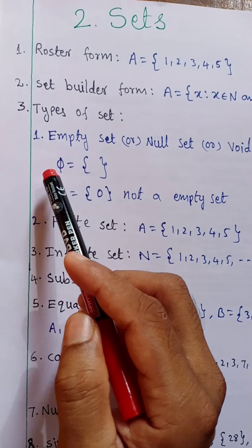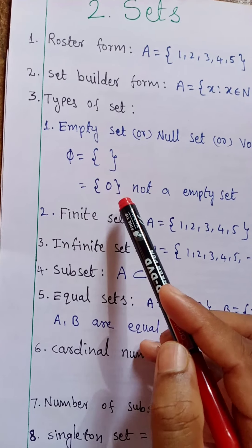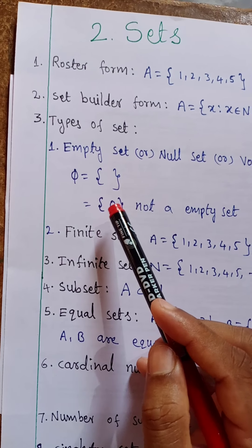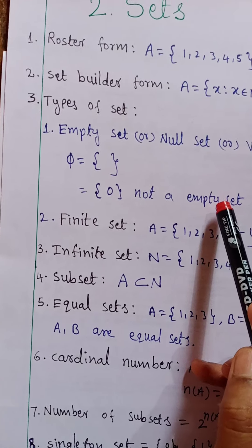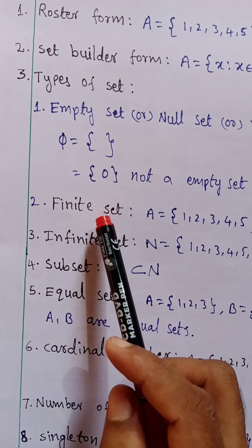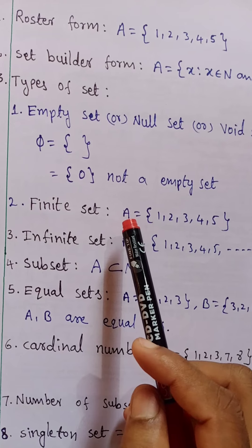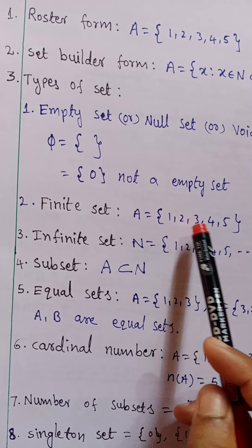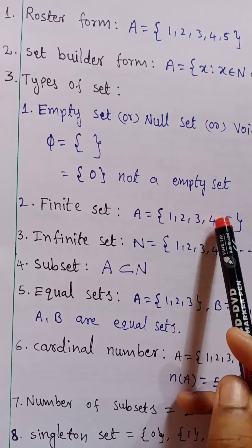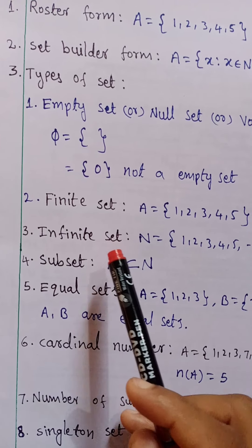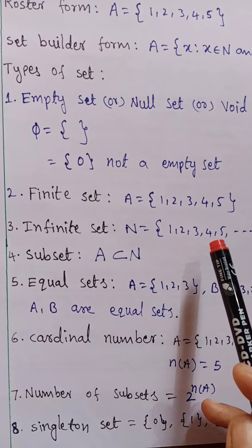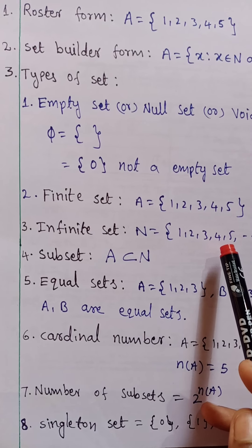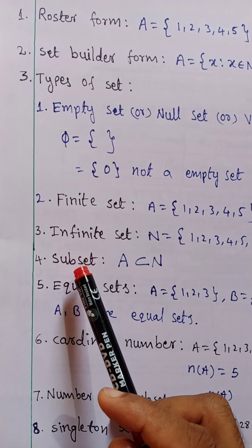Third one: types of sets. First one — empty set, or null set, or void set. This is denoted by phi. There are no elements in the set. Note: a set containing the element 0 is not an empty set. Second one — finite set: countable elements are there, that is called a finite set. See here: {1, 2, 3, 4, 5} — 5 elements, so this is a finite set. Infinite set: N equal to {1, 2, 3, 4, 5, ...} — uncountable elements, so it is an infinite set.